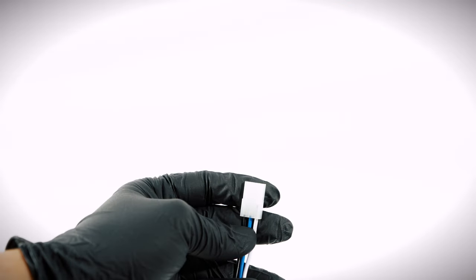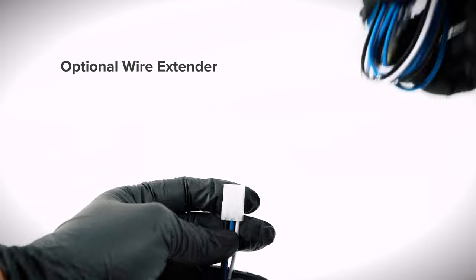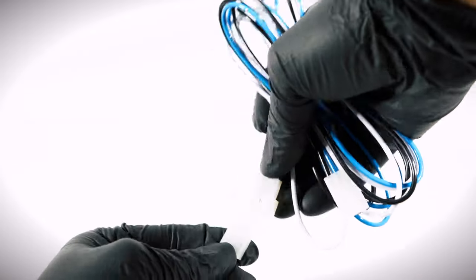If you purchased a longer downrod to install on the fan, you can use the included wire extender to provide more length. The wire extender is not required if using the downrod included with the fan.